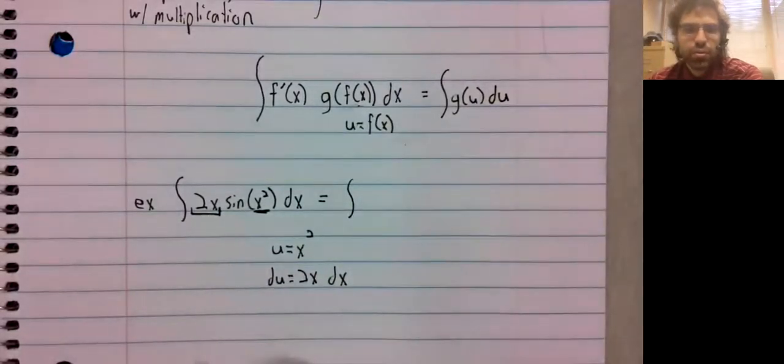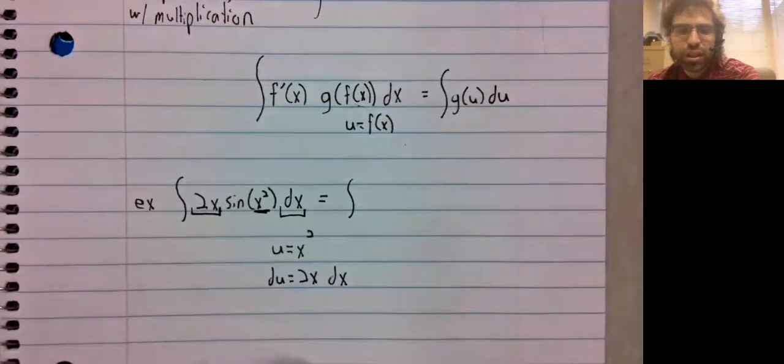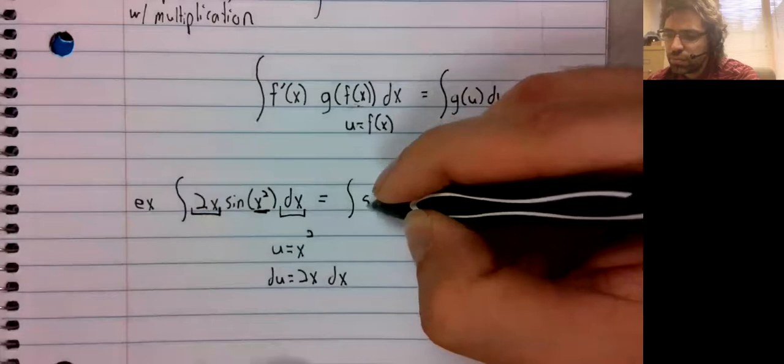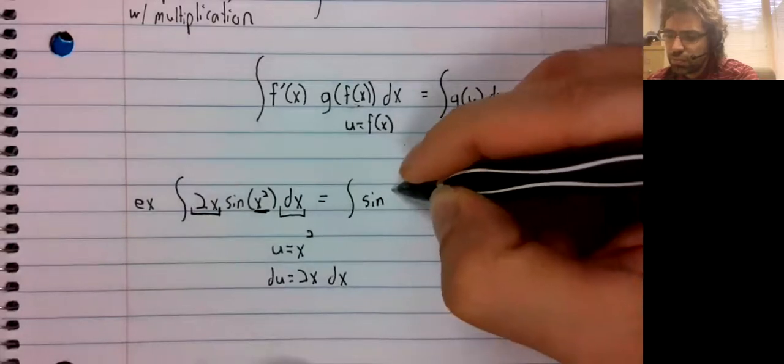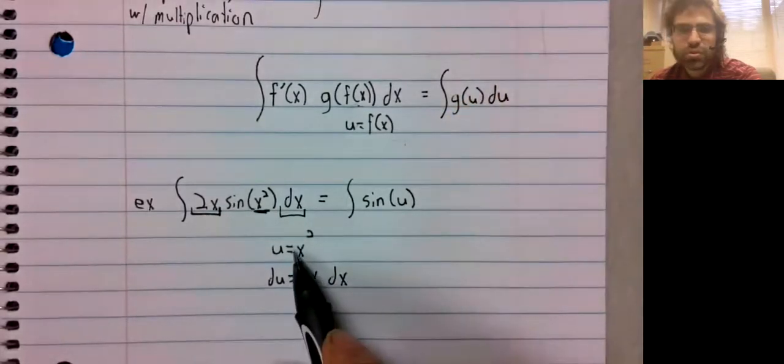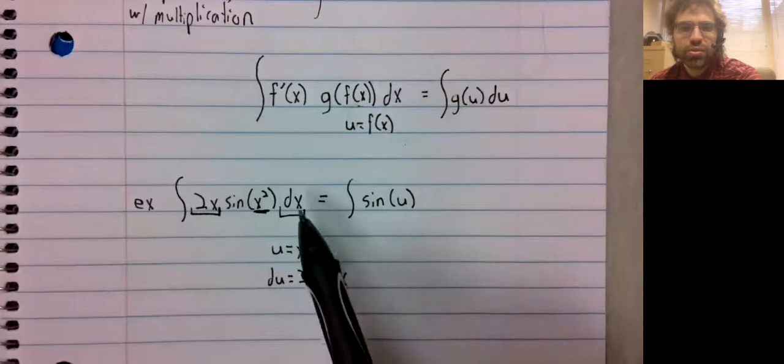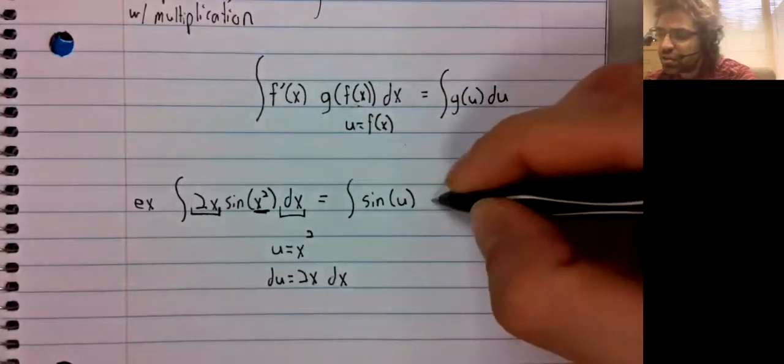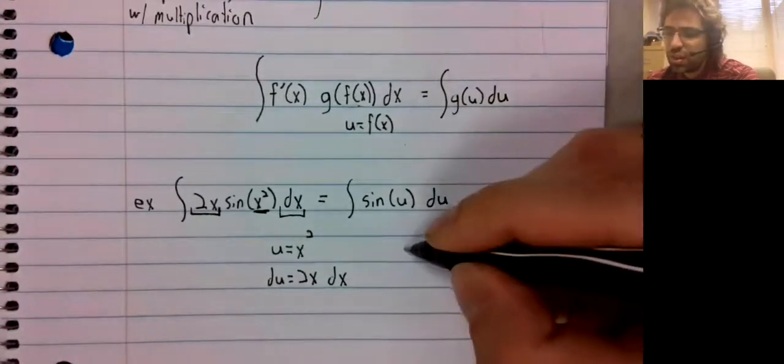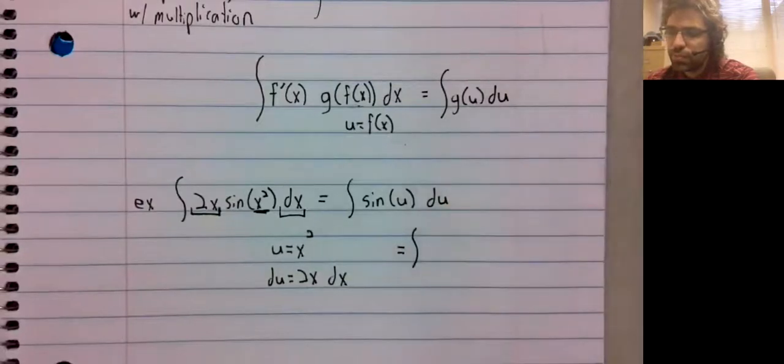So the idea behind that is we're now going to convert everything into u's. The sine of x squared becomes the sine of u, and this 2x and this dx combine to give us du.